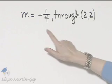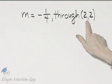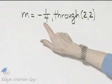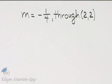We want to write an equation of the line with this slope through this point. Now notice we're given a slope and a point, so we'll use point-slope form.